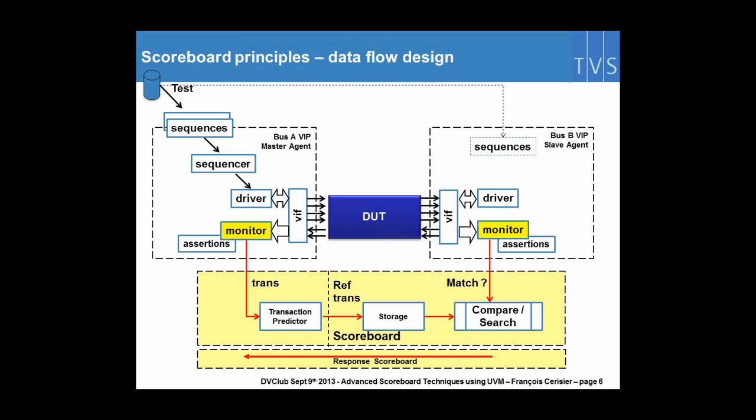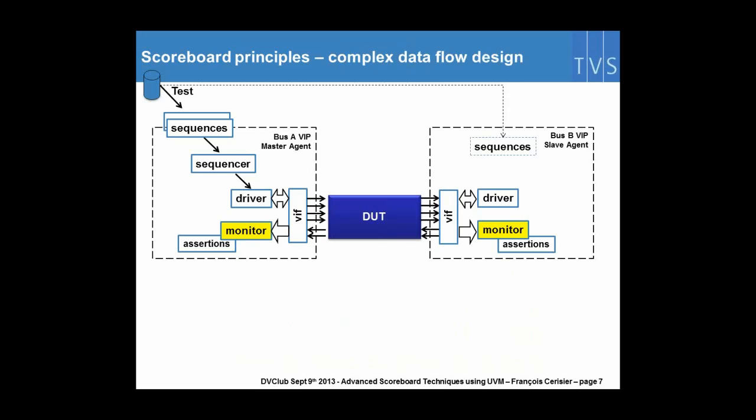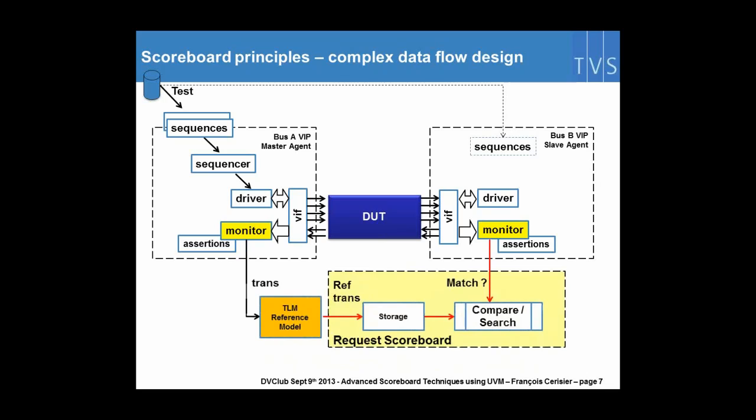On more complex designs, you may have a reference model available in which case you may skip the predictor component and directly call the reference model from the monitor and then take the reference transaction out of the reference model. Same for the responses. You will also need a response path.